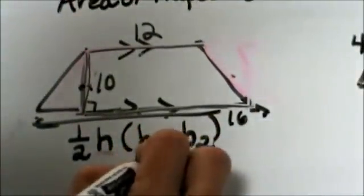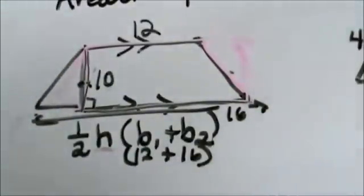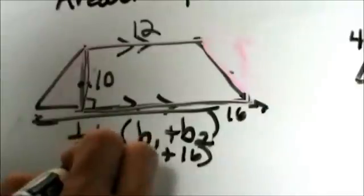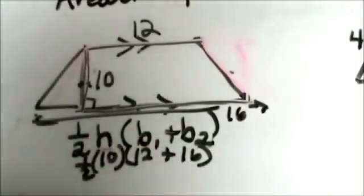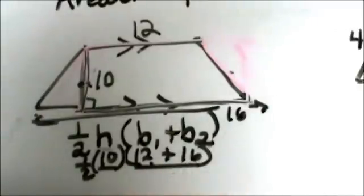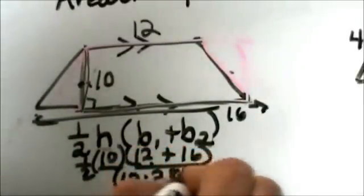Let's plug that in, 12 and 16. We are going to add those two together. We are going to multiply it times the height which is 10 and then take half of that product. So 10 times 12 plus 16 is 28, so 10 times 28 is 280.